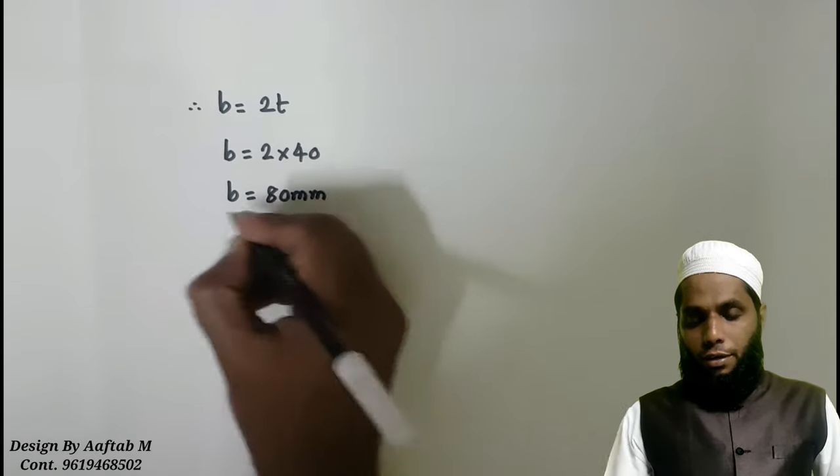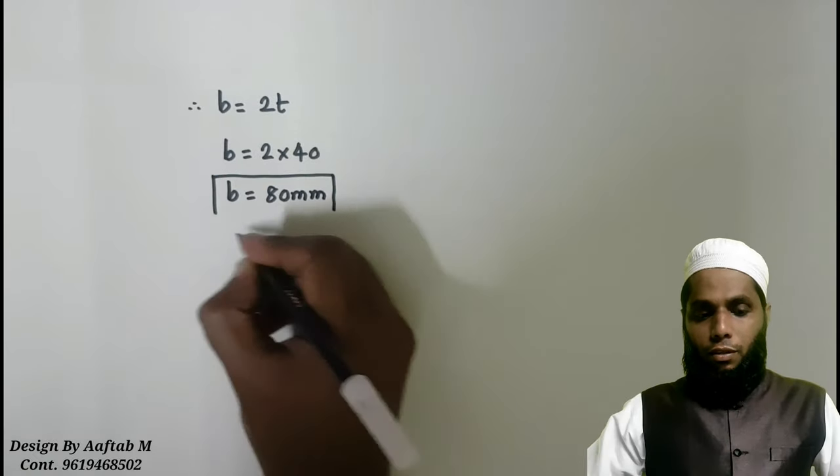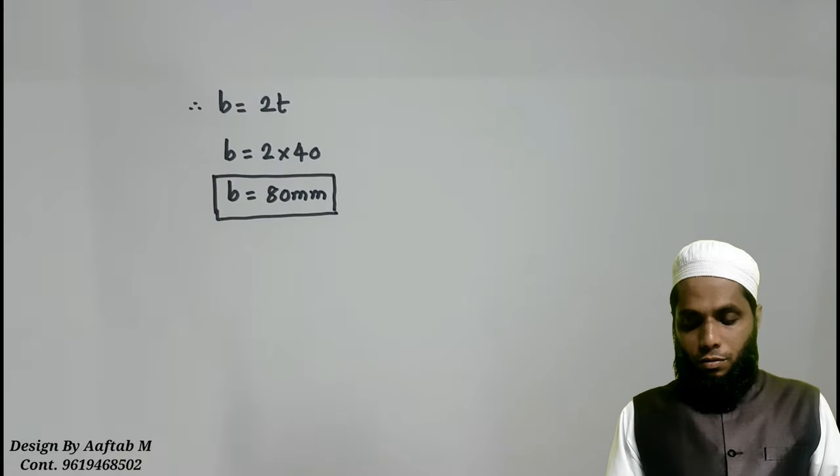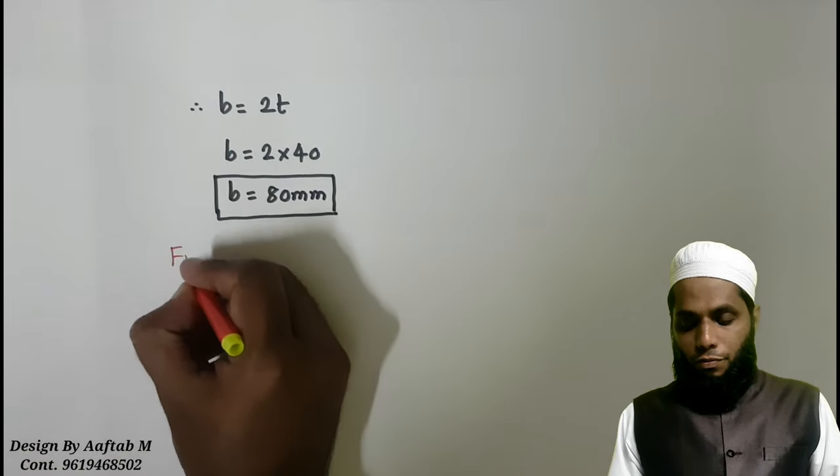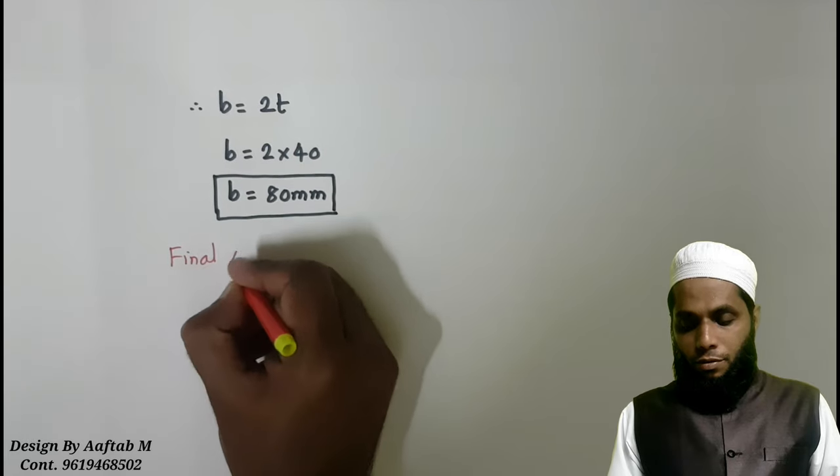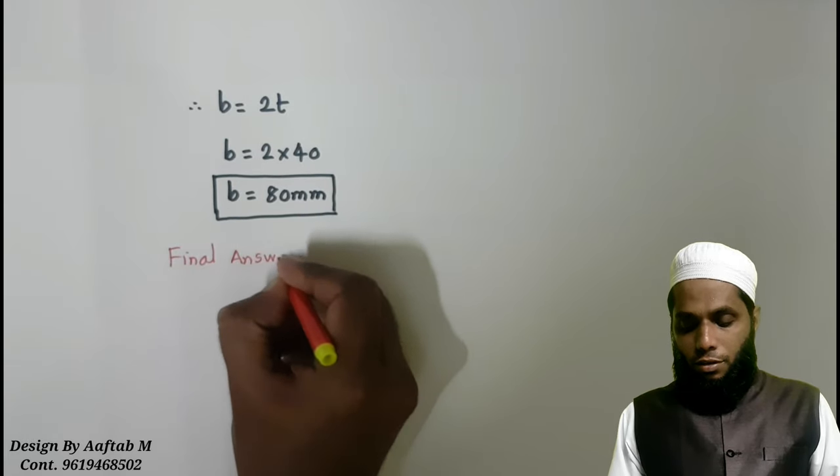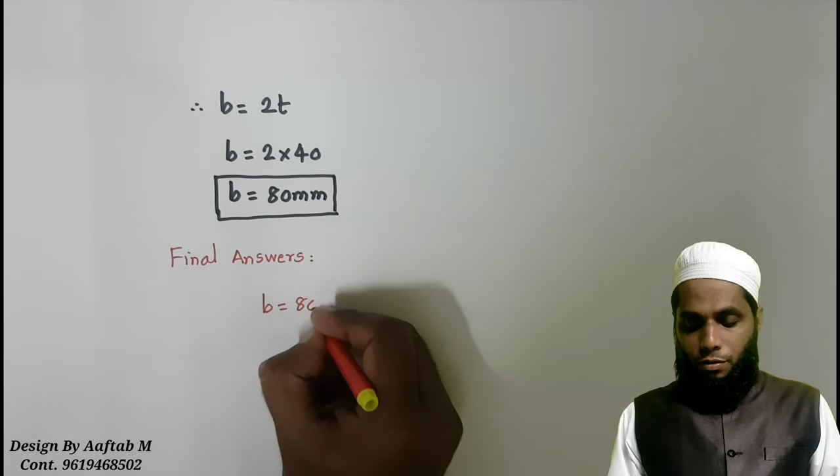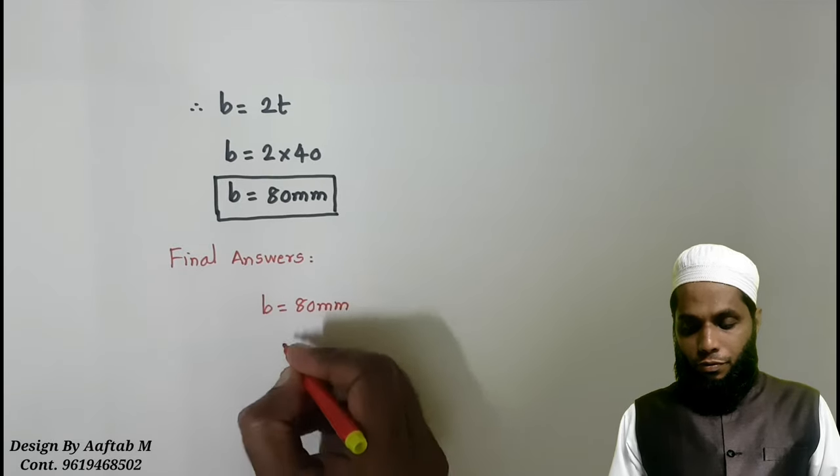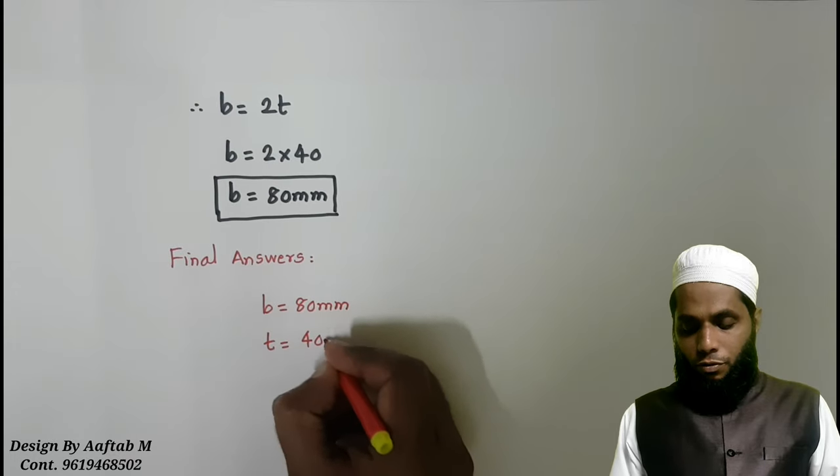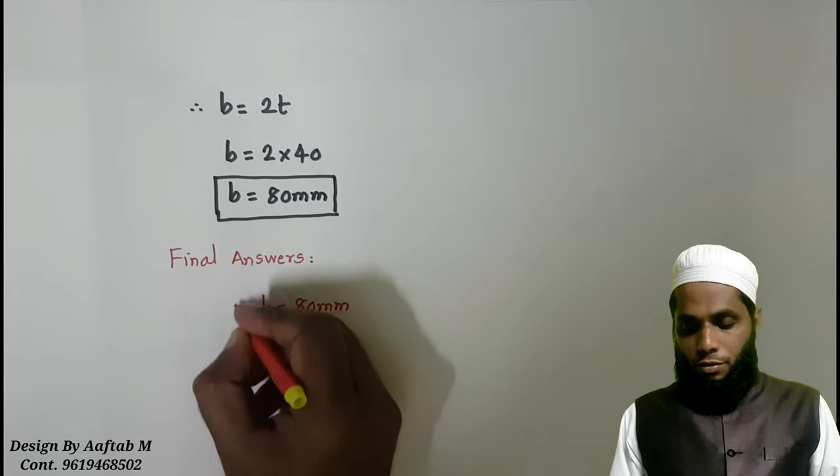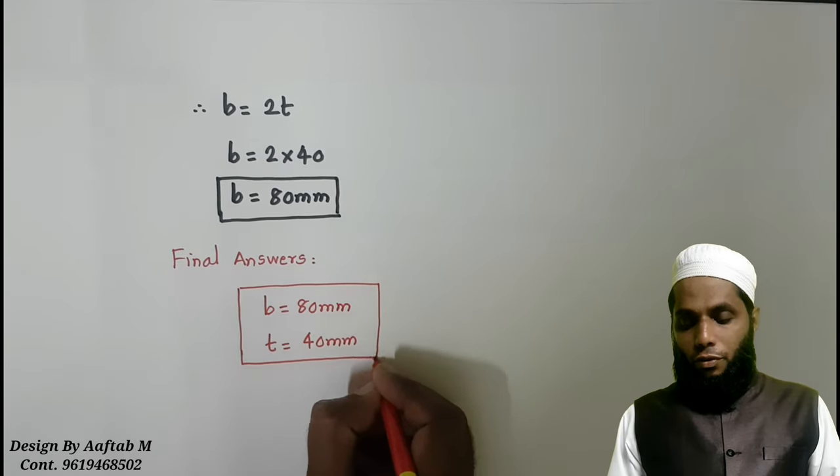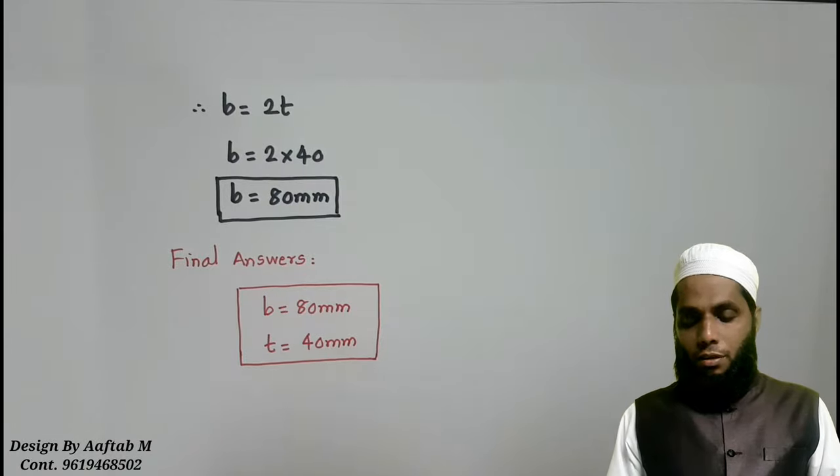Now, we will write the final answers. B is equal to 80 mm and T is equal to 40 mm. In this way, we have solved this important numerical for rectangular cross section with dimensions B and T.